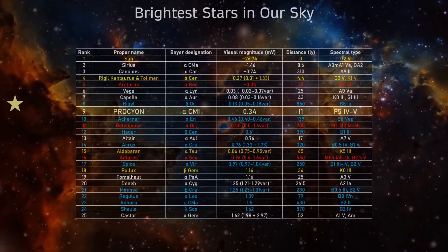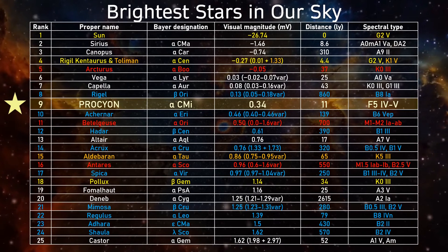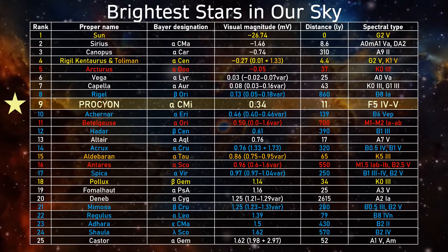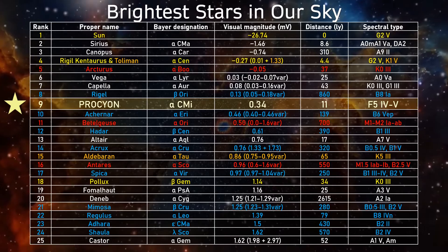Procyon is usually the eighth brightest star in the night sky, culminating at midnight on the 14th of January. Its hue has been described as having a faint yellow tinge to it.